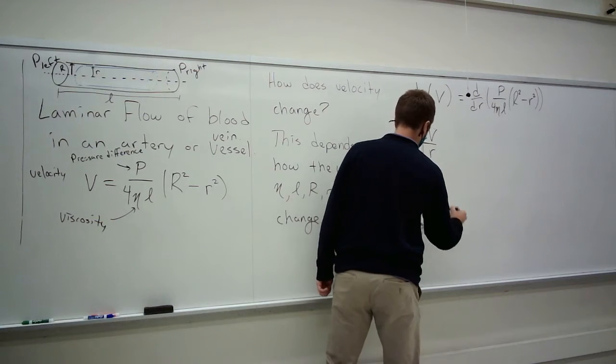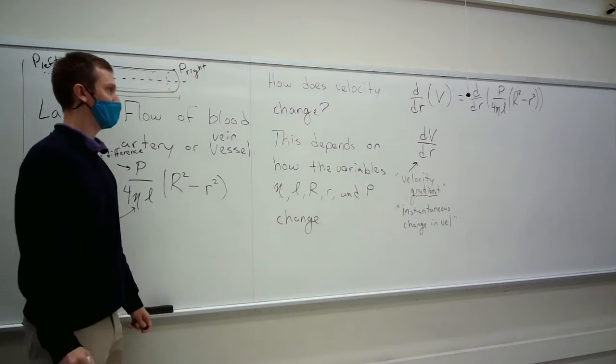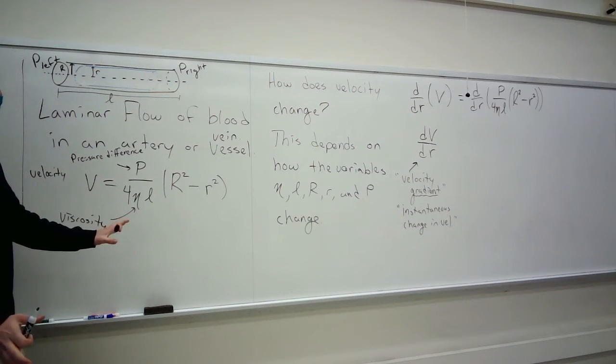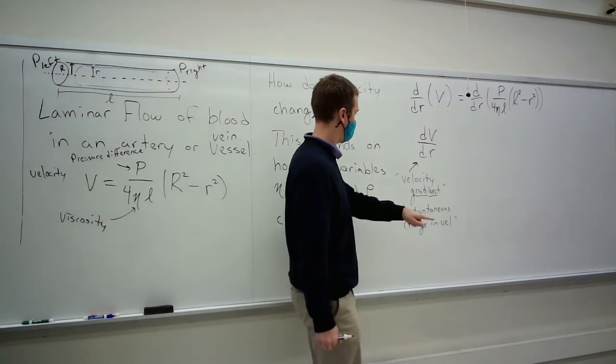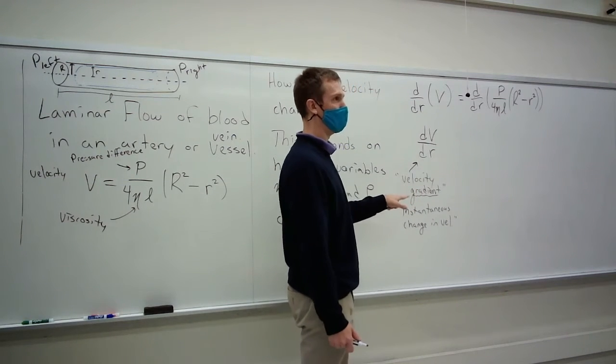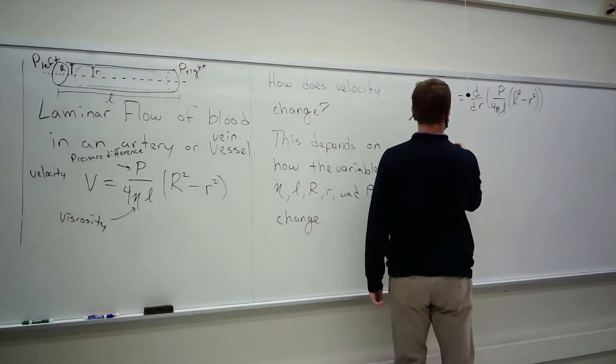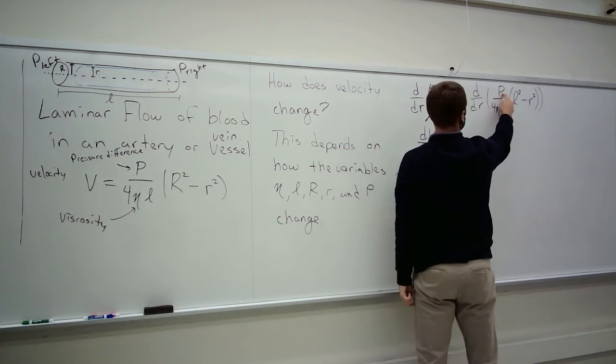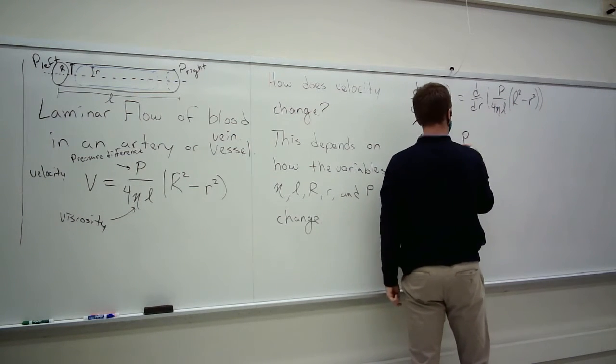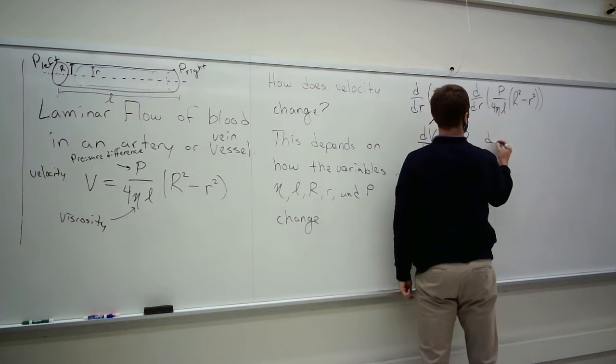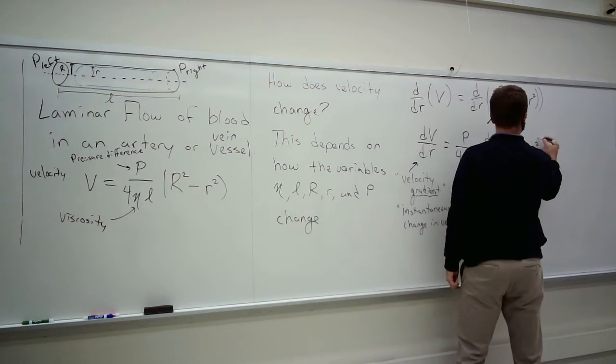So what is this? P over 4 eta L capital R squared minus little r squared. So the left side just says, hey, the dv dr, this is called the velocity gradient. So the gradient, or the instantaneous change in velocity. Gradient, this is just another word, if English isn't your first language actually, this might be the word that you use in your translations of slope. So depending on where you're from, that might be what you're familiar with. Gradient means something like slope.